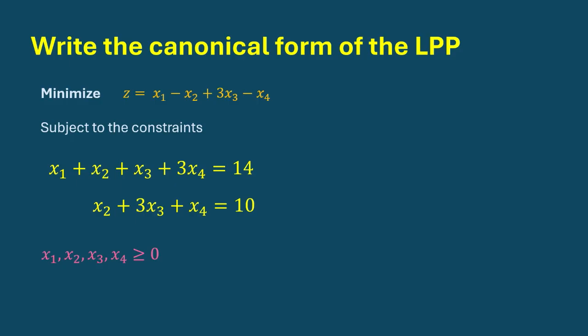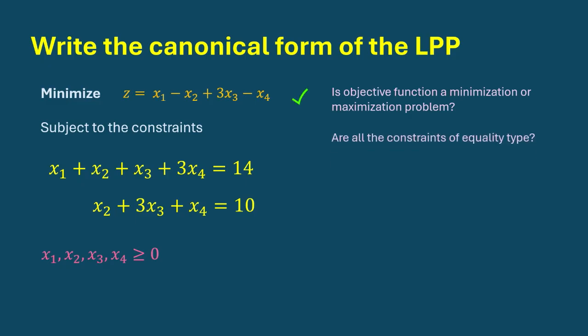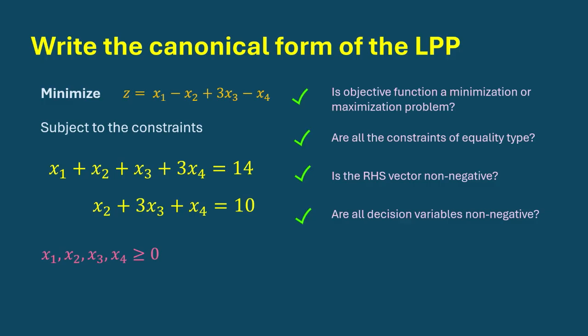Let's look at an example. In this example, we want to write the canonical form of the given problem. Here, we try to minimize an objective function subject to some equality constraints and non-negative constraints on the variables. Let's check the requirements. First, is the objective function a minimization or maximization problem? Yes, it's a minimization problem. Are all the constraints of equality type? Yes, this is also true. Is the vector b non-negative? Yes. Are all decision variables non-negative? Yes. So the problem is already in its standard form.